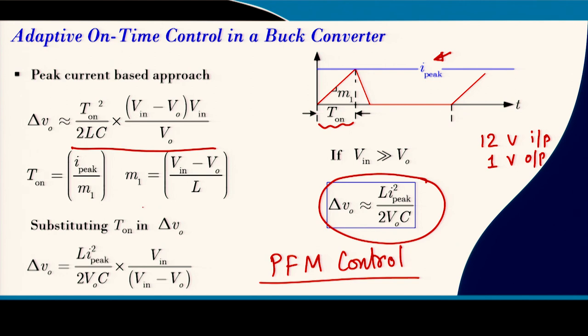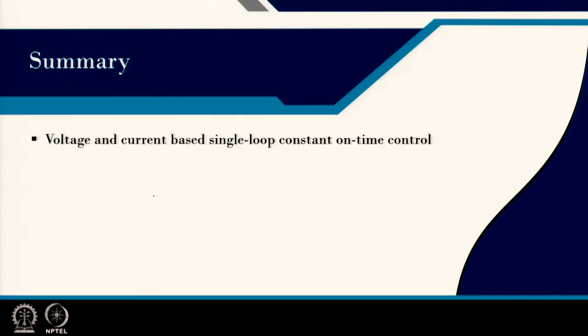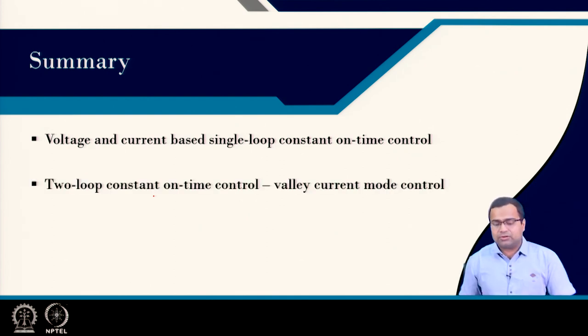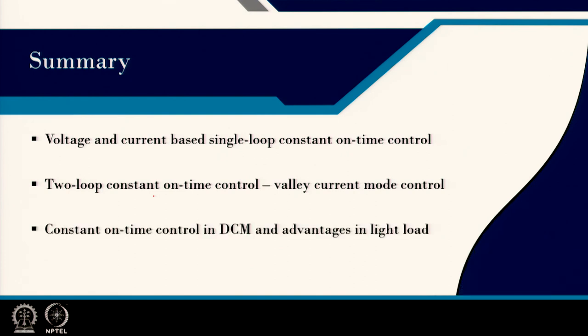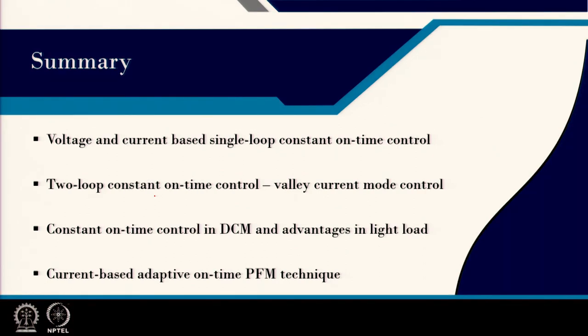With current-based adaptive on-time (also known as PFM — pulse frequency modulation), the on-time adapts with input voltage, retaining nearly constant ripple. Under fixed input voltage, none of the on-time expression quantities change, so linear variation of switching frequency with load current is retained. Under input voltage variation, ripple remains controlled. This technique is used in many commercial products. To summarize: single and two-loop constant on-time controls, DCM advantages, and current-based adaptive on-time PFM have all been discussed. Thank you.